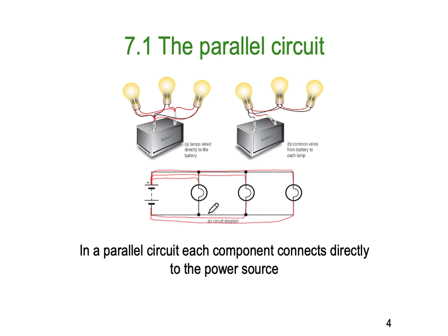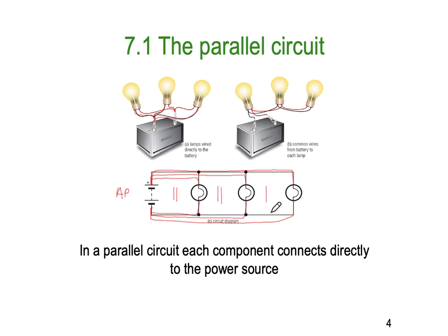One way of connecting up the parallel circuit: the battery or the applied voltage (AP for applied voltage) is in parallel — I'll use two vertical lines to represent parallel — with the first lamp, which is in parallel with the second lamp, which is in parallel with the third lamp, and so on and so forth.